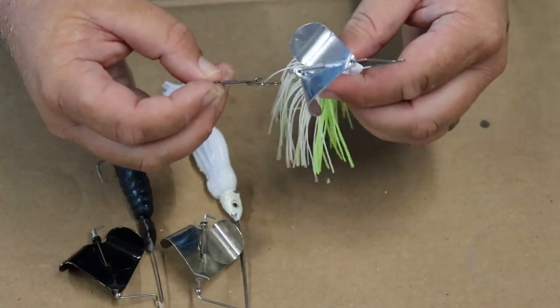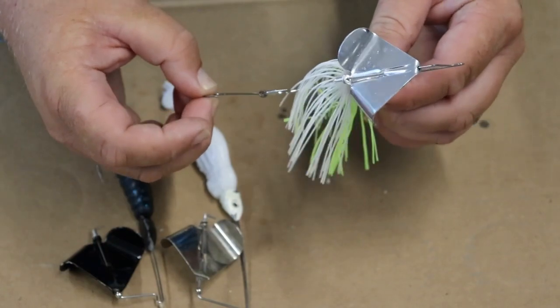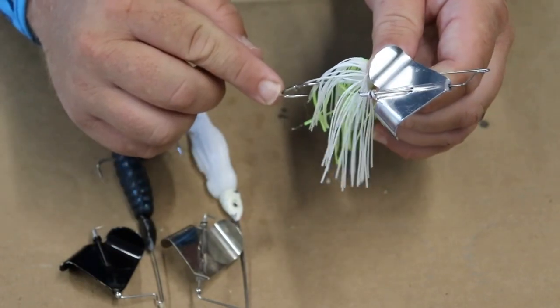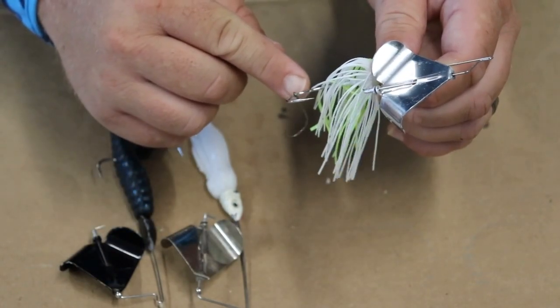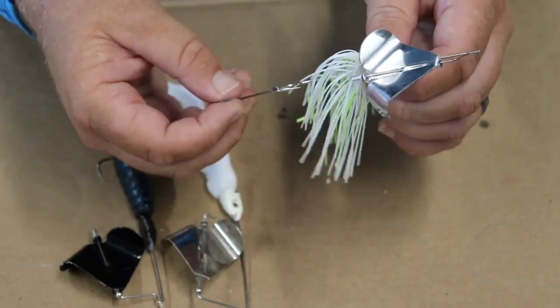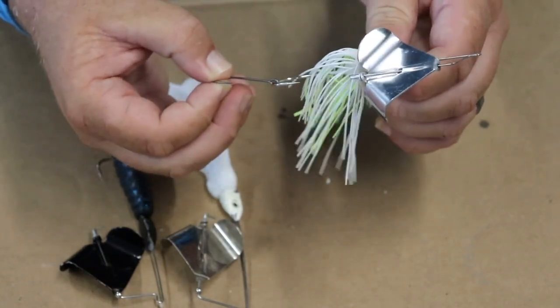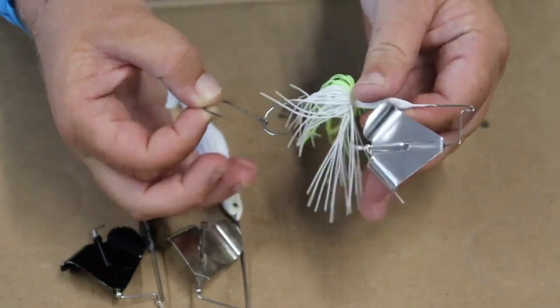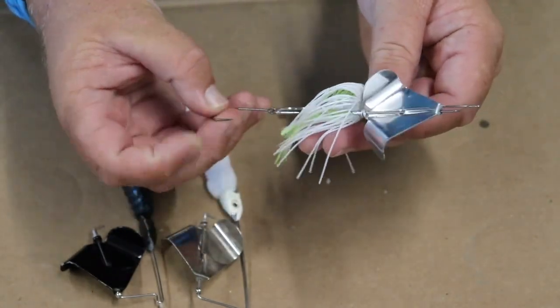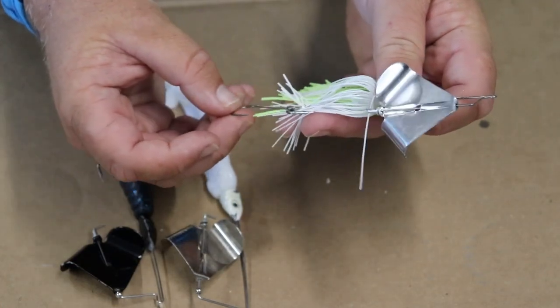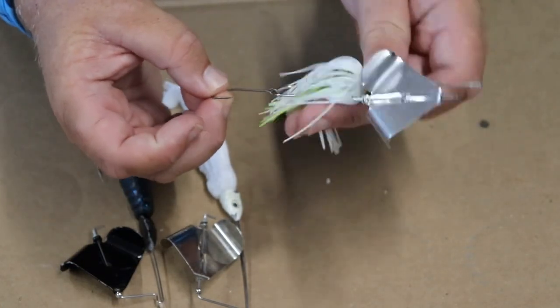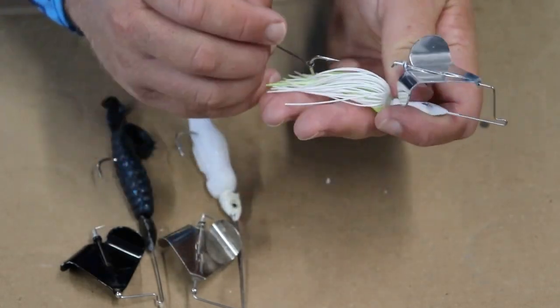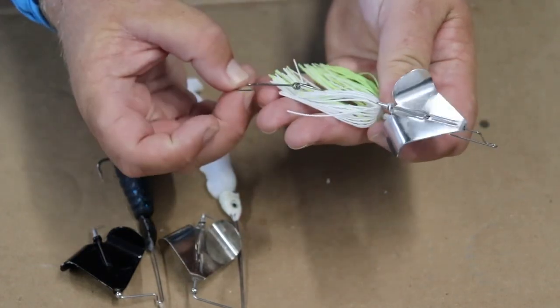So I generally do not like throwing a trailer hook with a toad, but with a skirt, for sure. I'll throw on this Hayabusa 929, which is my favorite trailer hook system. It actually comes with these little rubber beads that you put on the bottom and the top to keep it on the shank of the hook here. With the skirt, you don't have to worry about any snagging of the trailer hook because there's nothing really to snag on. This is primarily when I'm fishing around sparse or limited cover and I'm not worried about snagging.